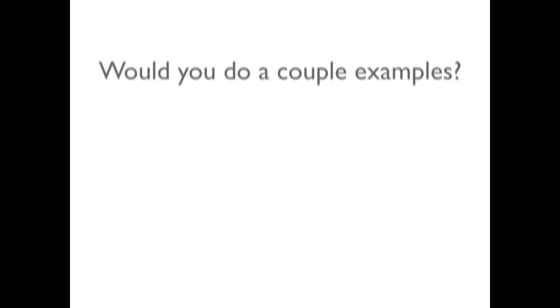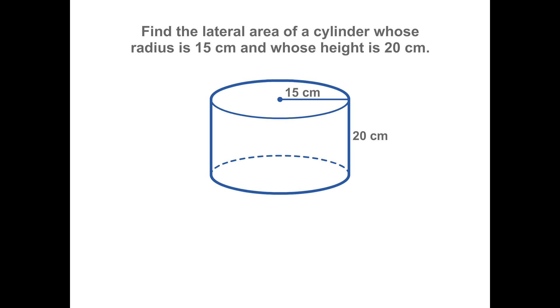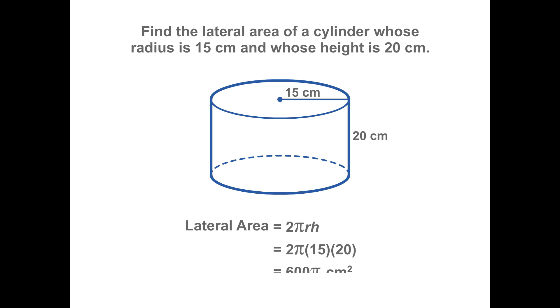Would you do a couple of examples? Sure. Here we want to find the lateral area of the cylinder. Substitute the values for the radius and height into the formula for the lateral area. The result is 600 pi, or approximately 1,885 centimeters squared.